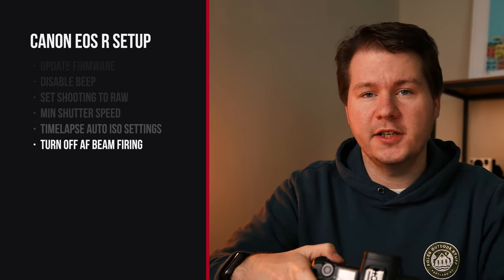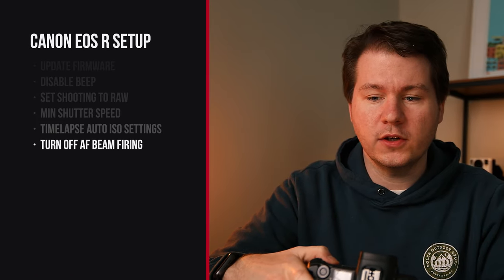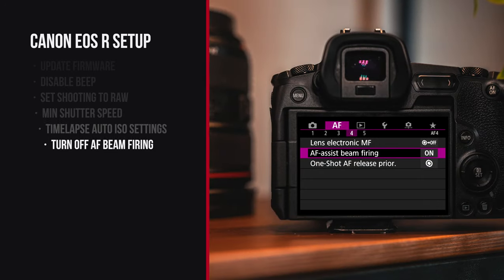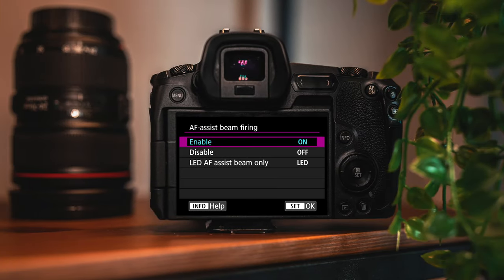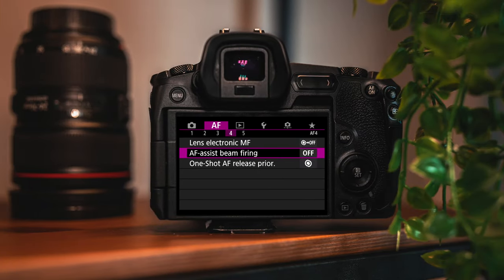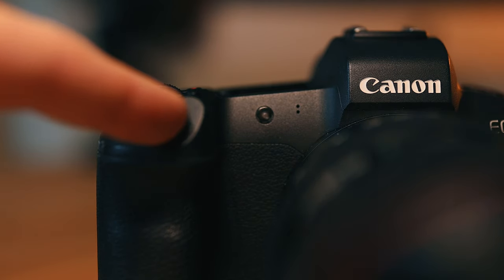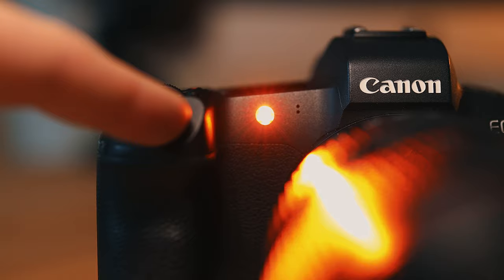The next setting is in the autofocus 4 settings menu — it's the AF assist beam firing. This is the little light that turns on when you're trying to autofocus. By default, when you press the shutter halfway down, that little light turns on, and I find it really annoying, so I disable it.